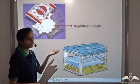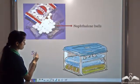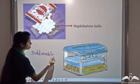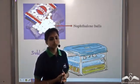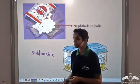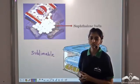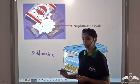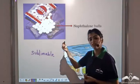Solids that sublime are known as sublimable solids. An example of a sublimable solid is naphthalene balls. You must have observed that when you keep naphthalene balls during winters while packing your clothes in trunks, and when you open them again in the next season, you do not see the solid naphthalene balls and neither do you see any liquid forming. This is because naphthalene balls are sublimable — they directly change into the gaseous state, so we see neither the solid nor the liquid form.